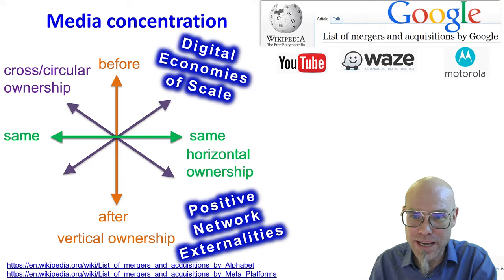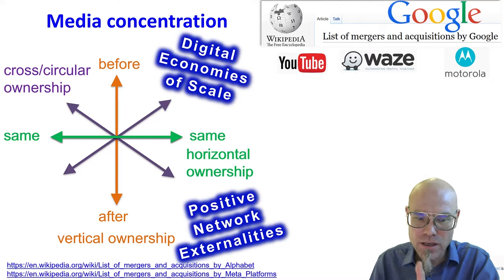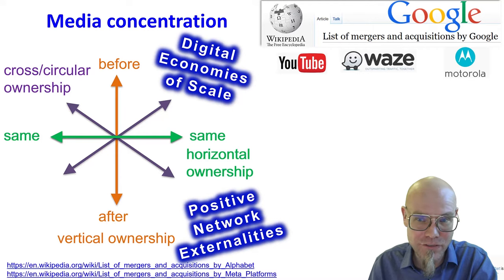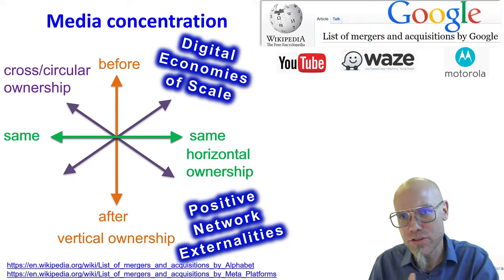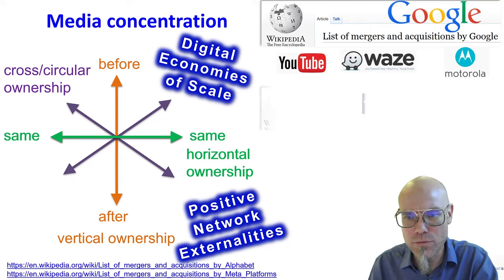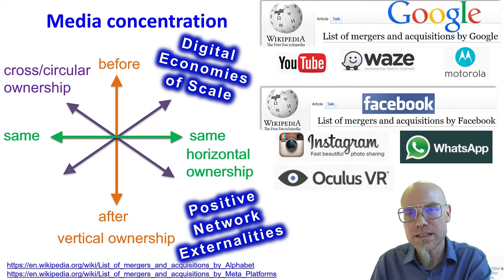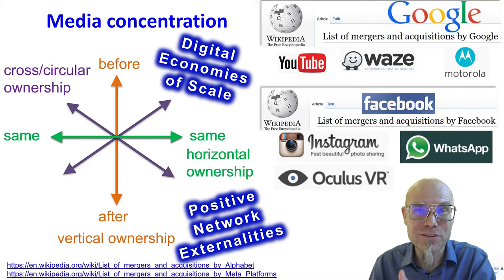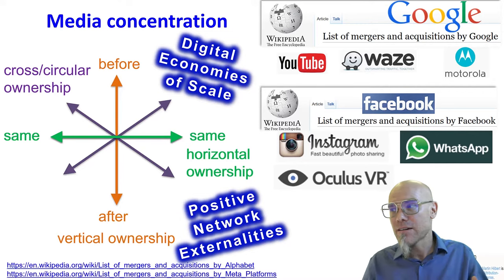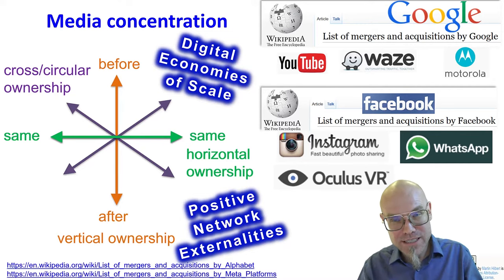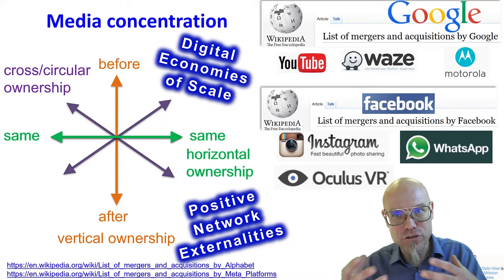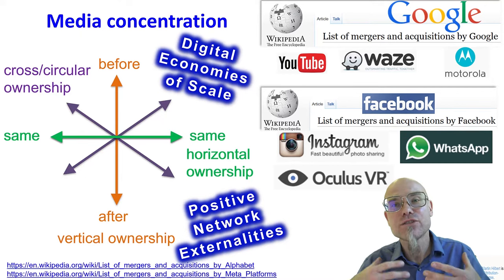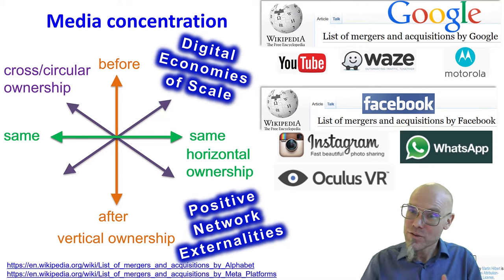If you look at the big digital players — Google, for example — you can go to a Wikipedia page and look at the list of mergers and acquisitions that Alphabet, the Google parent company, has been doing, starting with YouTube, or traditional companies like Motorola in the mobile phone space. The same for Facebook, now called Meta, which purchased Instagram, WhatsApp, and Oculus — moving into the VR world with Oculus.